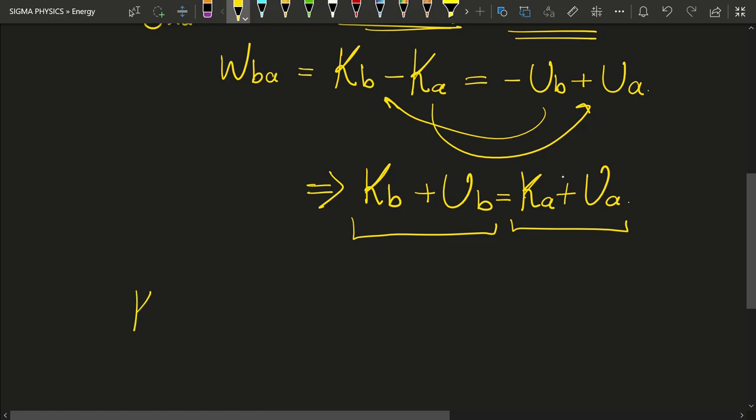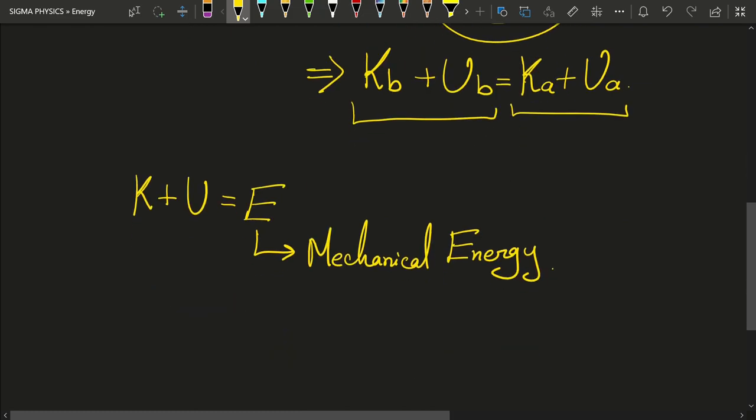We represent the sum of kinetic energy and potential energy as E, where E is known as the mechanical energy of that body. And hence this is our golden conservation principle. This is the conservation of mechanical energy.